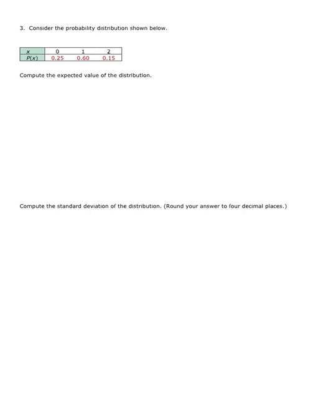Consider the probability distribution shown below. Compute the expected value of the distribution. Our top row, we have discrete values 0, 1, and 2. Our probabilities 0.25, 0.60, 0.15. That adds up to 1, so we have a legitimate probability distribution.